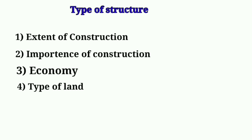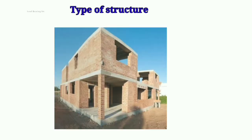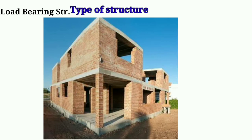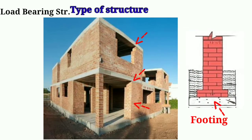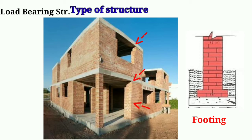Load bearing structures are those structures in which the slabs or roof rest on the wall, and the wall rests on the wall footing. The load transfer mechanism is such that the load of the slab or roof is transferred to the wall, wall to the footing, and then footing to the hard strata.